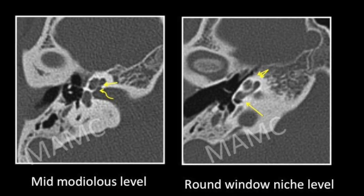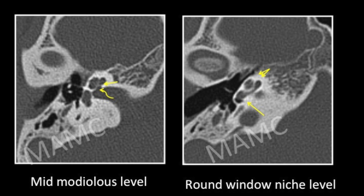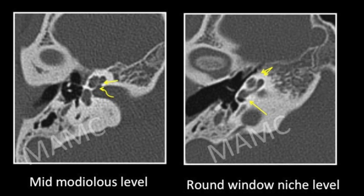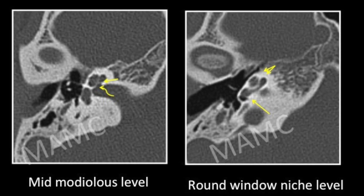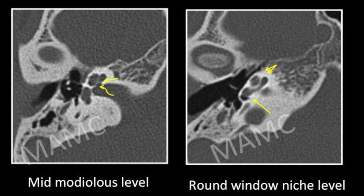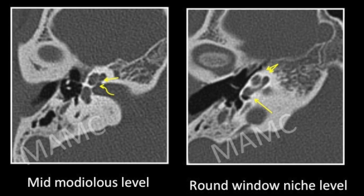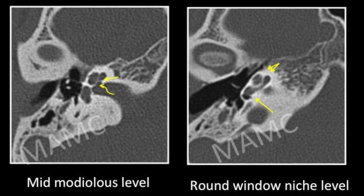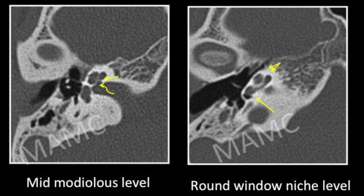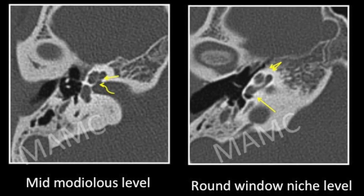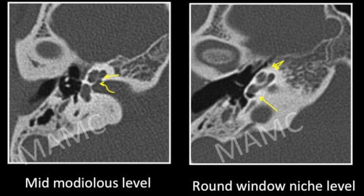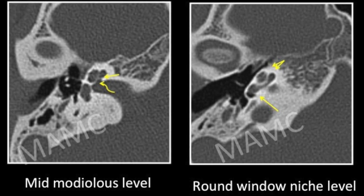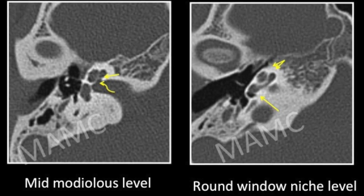At the round window niche level, we can see the basal, middle, and apical turns of the cochlea, which are separated by the interscalar septum — the bone that separates these turns.